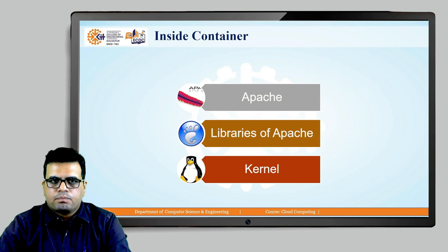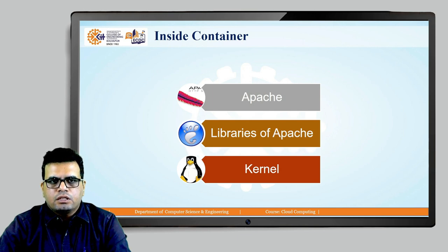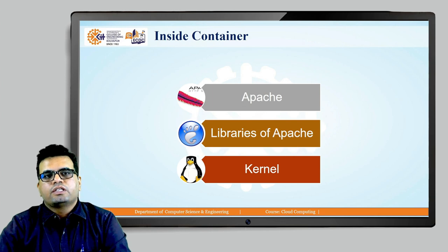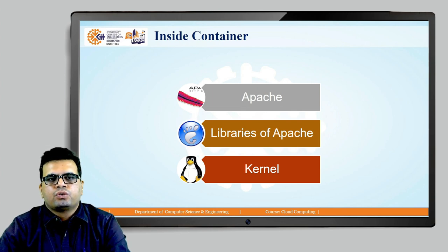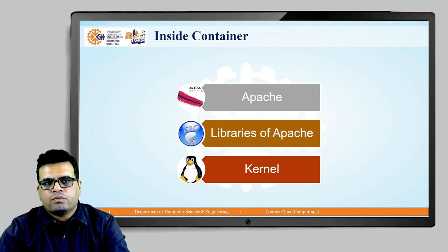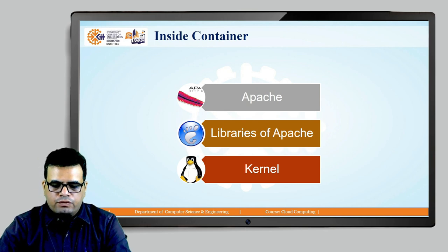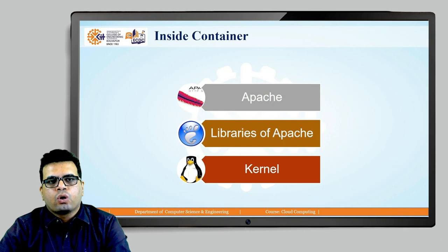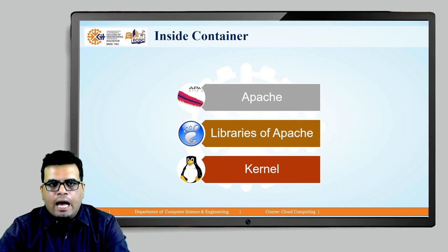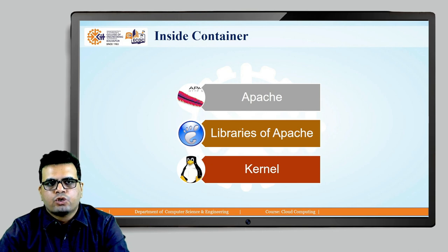I am sure you are aware of WSL — Windows Subsystem for Linux. In case we are willing to execute Docker containers in a Windows-based environment, which uses a different kernel, we must have a Linux kernel. So the question is: how can you execute a Docker container image on a Windows platform?